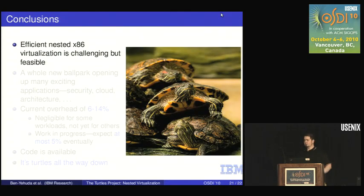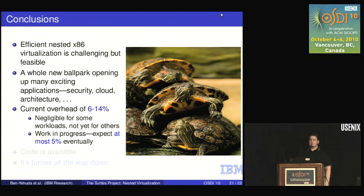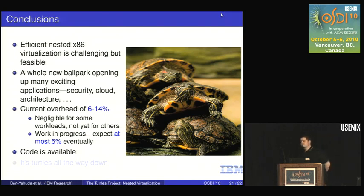To conclude: efficient nested x86 virtualization is challenging but feasible. It opens up exciting possibilities in security, the cloud, and computer architecture — such as how to safely inject interrupts directly to a nested virtual machine. We see current overhead of 6% to 14% for non-I/O-intensive workloads. This is negligible for some workloads but not yet for others, and we expect to get below 5% eventually. The code is publicly available.